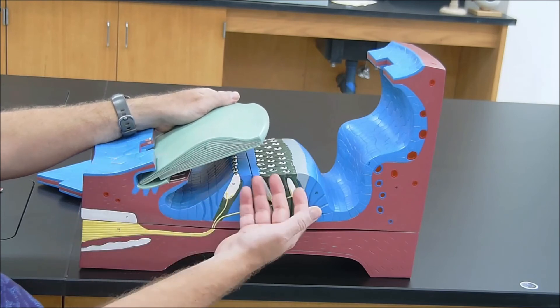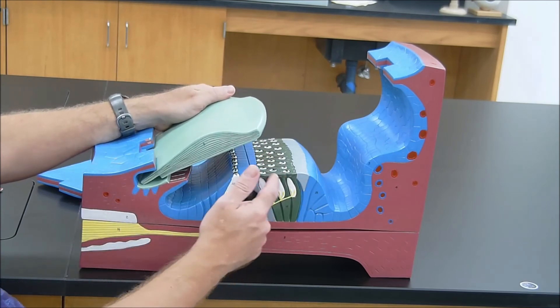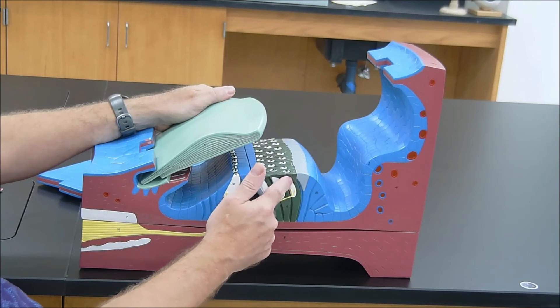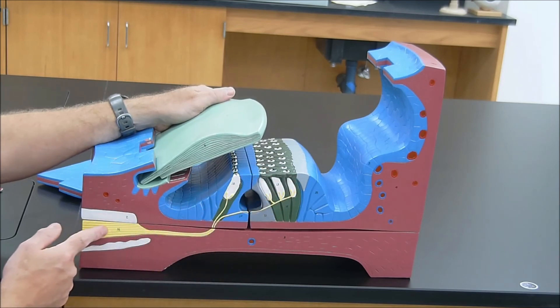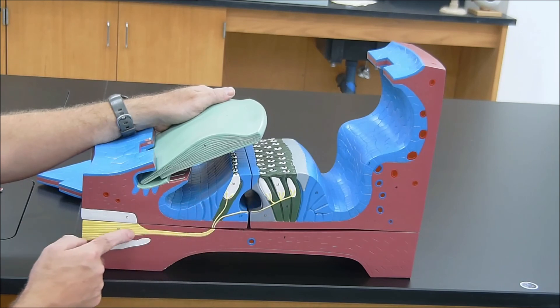So that tectorial membrane will bump up against those hairs, and then we'll start to create graded potentials, and then we're going to eventually form action potentials in the afferent sensory neuron, which remember was going to be our cochlear branch of our vestibulocochlear nerve.